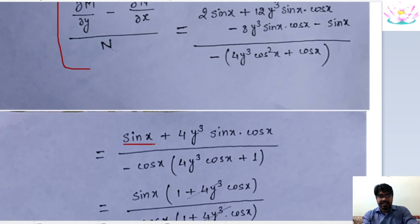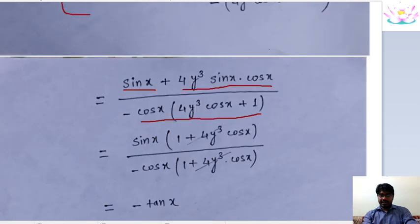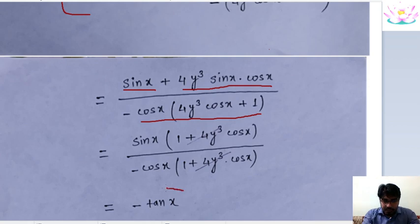Continuing the simplification: 12y³·sin x·cos x minus 8y³·sin x·cos x gives 4y³ times this term. Where N is this expression, after simplifying and taking cos x as a common factor, we get this result. In the next step, after further simplifying, we get simply minus 10x.